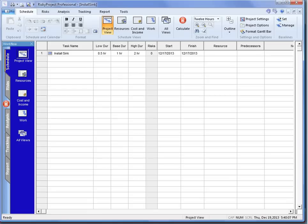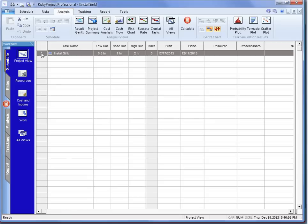Now what I've done in the software Risky Project Professional, I've just created that install sink task. And you can see that what we have is a low duration of half an hour, base duration of an hour and a high duration of two hours. And if we quickly run a simulation, because there's only one activity it occurs incredibly fast, we can take a look.